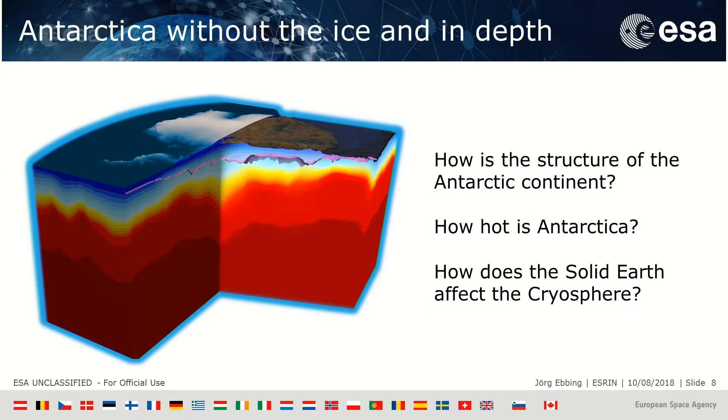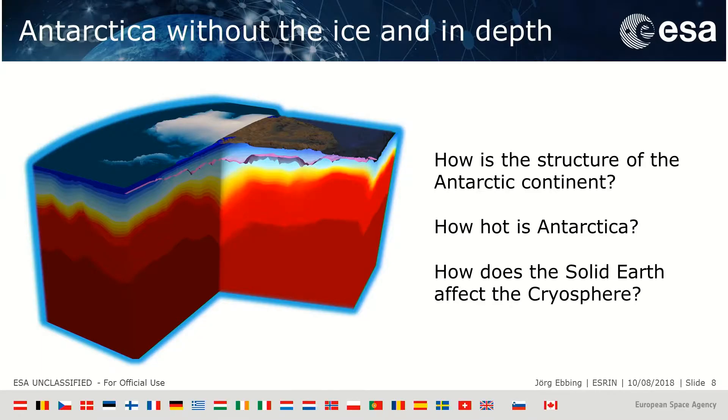Antarctica is challenging as a geophysicist because you cannot really map the geology. There are only some outcrops at the coastal lines and in the trans-Antarctic mountains - most of the continent is covered by ice. We have to use other methods to determine the structure of the Antarctic continent and estimate how hot Antarctica is. Despite the ice on top, Antarctica seems to be in some parts quite hot. The question is: can we give an estimate of how the solid earth is affecting the cryosphere, the ice mass change, and ice dynamics?